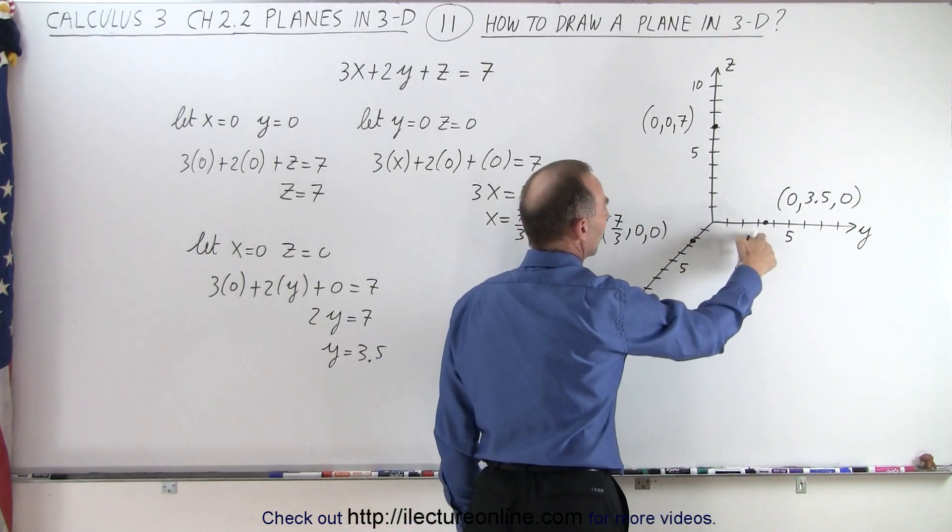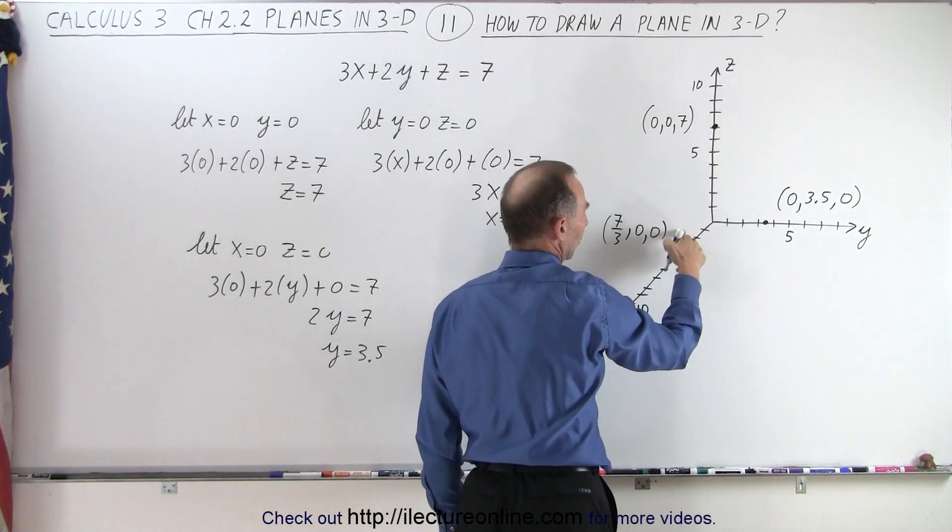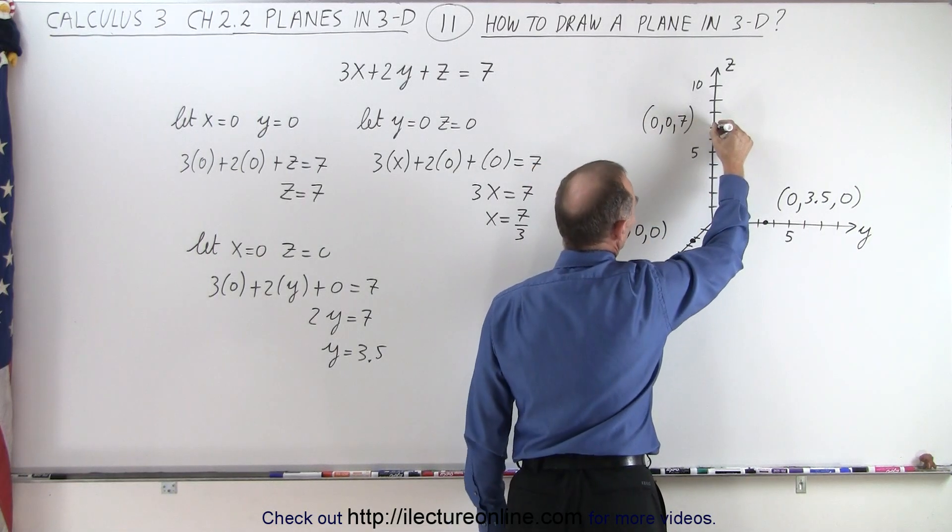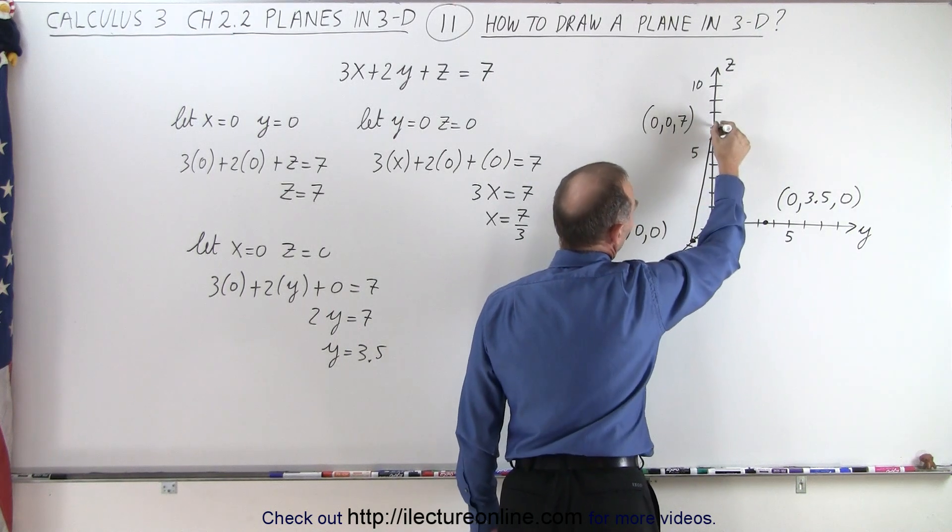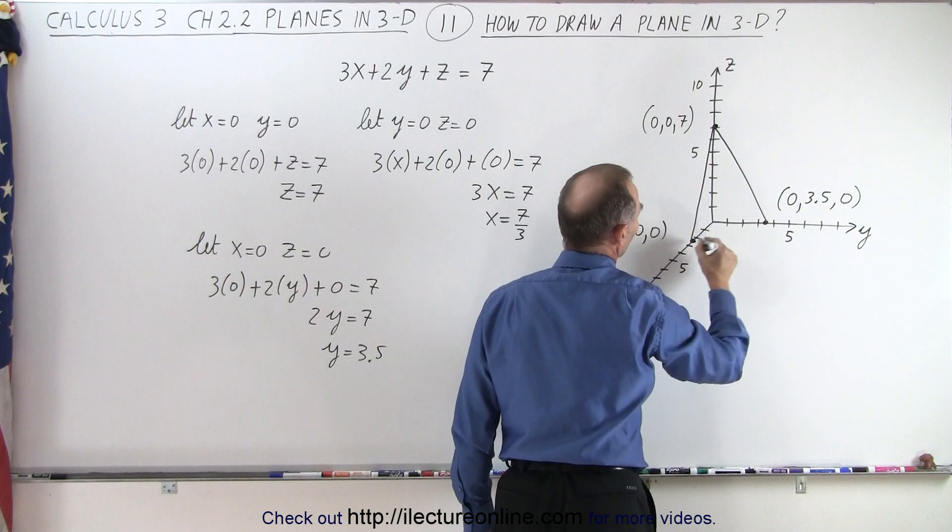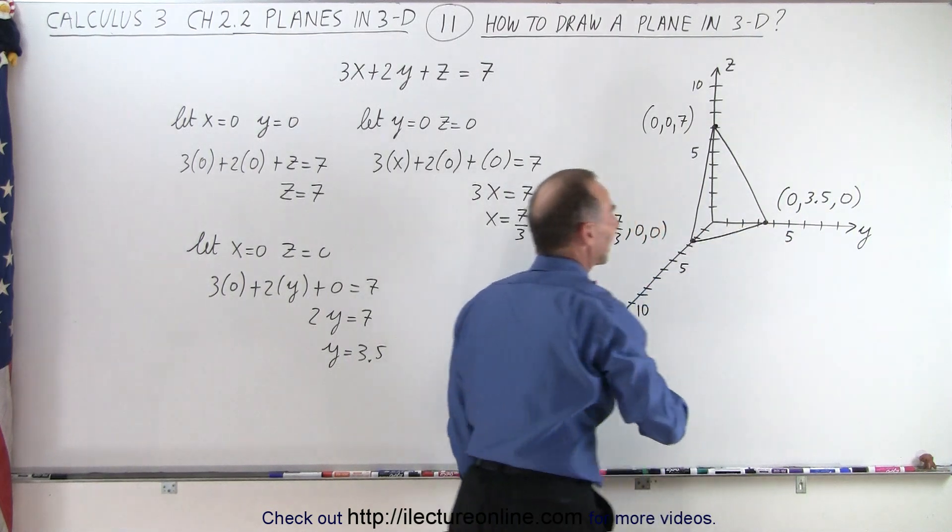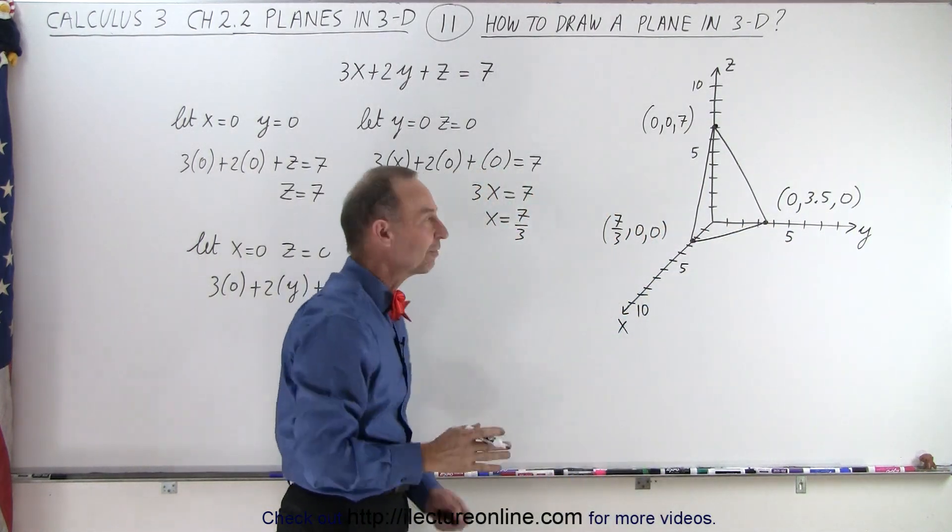Now we have those three points, one on the z-axis, one on the x-axis, one on the y-axis. If we now connect those with lines, like this, and like this, and like this, we get the sense of a piece of that plane.